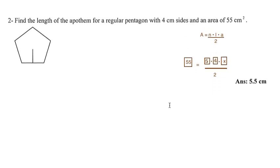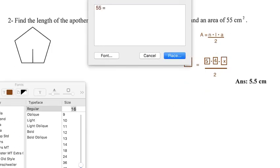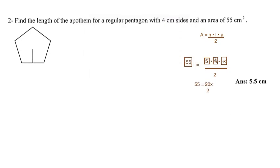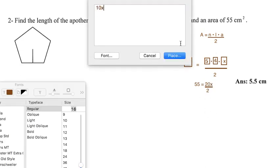I'm going to rewrite this without the boxes. I've got 55 equals 5 times 4 times X, which is 20X all over 2. I've simplified the 5 times 4 times X, which is 20X. So I've got 55 equals 20X over 2. The best way is to simplify this right-hand side. 20X divided by 2 comes out to 10X. You're left with 55 equals 10X.